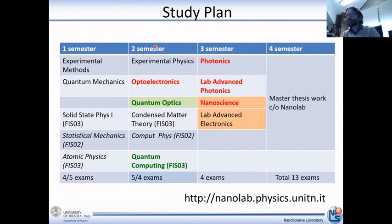In the second semester, you have the mandatory course of laboratory of experimental physics. And then you have the first characterizing course of the nanophotonics track, which is optoelectronics. Then, depending whether you are more interested in quantum photonics or classical photonics, either you choose quantum optics and quantum computing, or you can select condensed matter physics and computational physics.